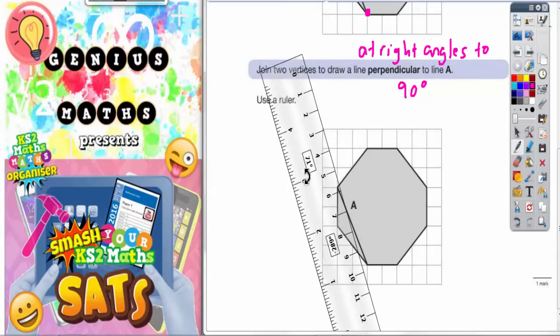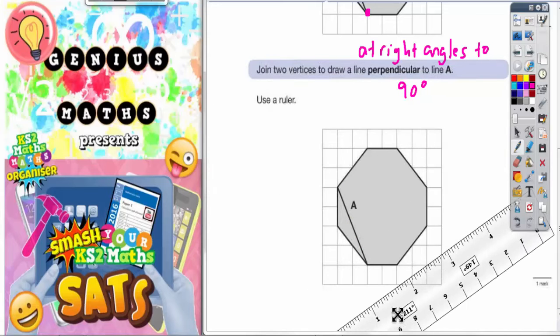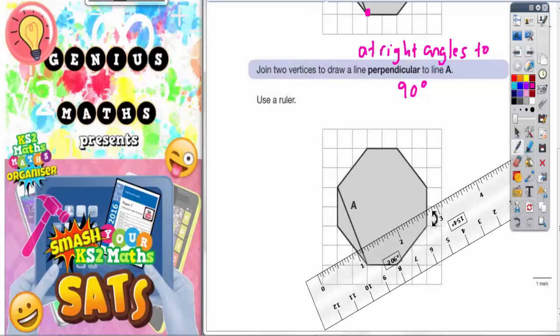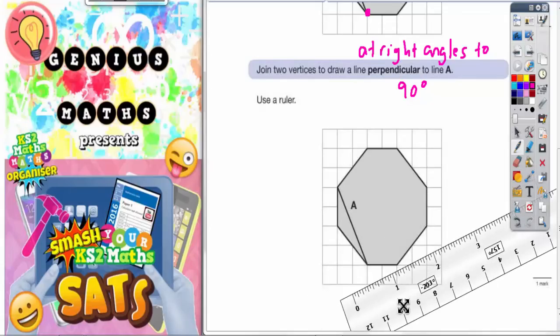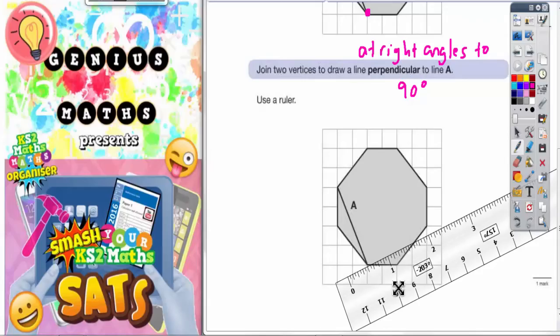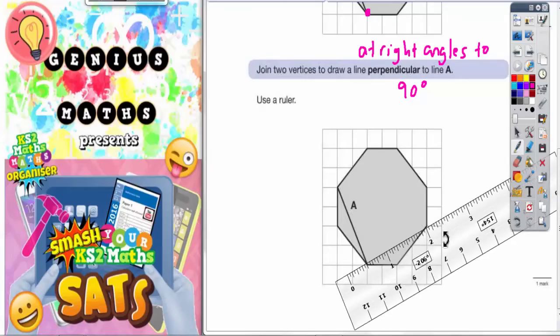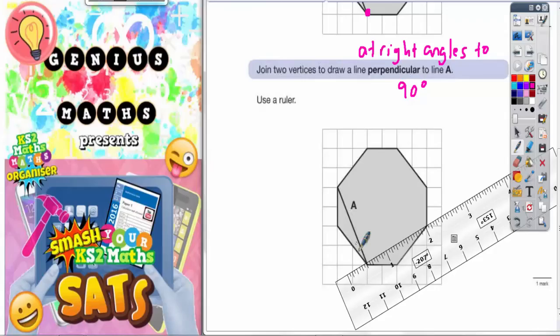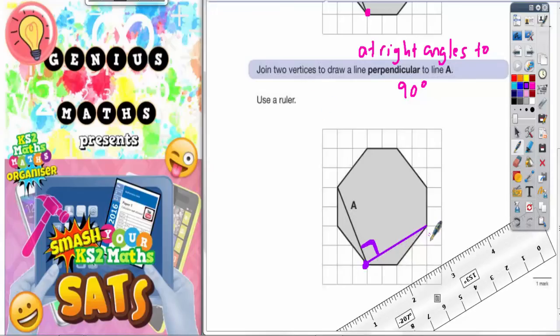Now there's two possible answers here so we'll use a different colour for two answers. If you get your ruler and put it on there like that, all you've got to do is join to another corner that's going to make a right angle. And you can see this here now makes a right angle. So one answer you could possibly do is to join that line to that corner. It does say join the vertices. So the two vertices we join there are that one and that one.